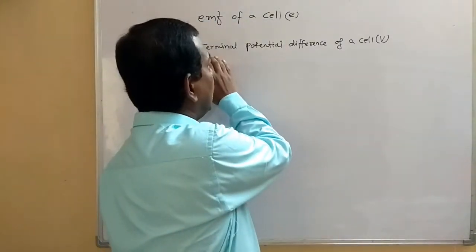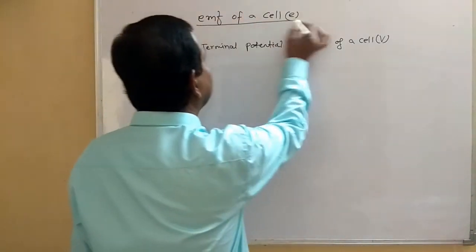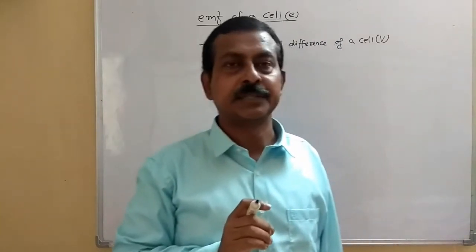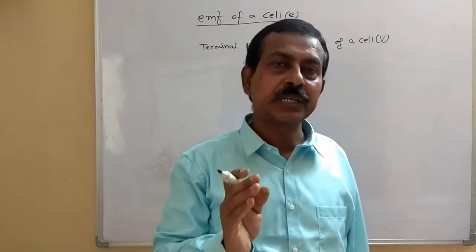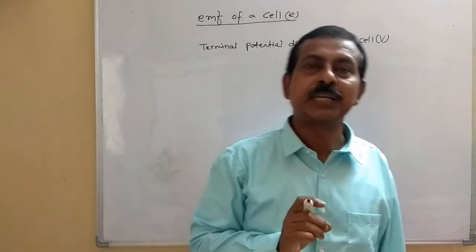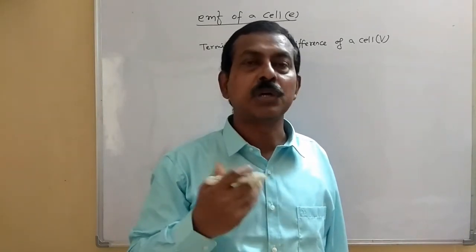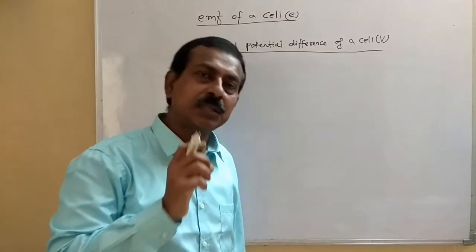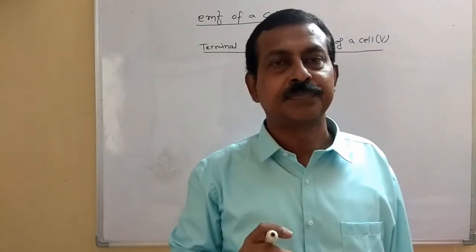Let's take EMF of a cell and terminal potential difference of a cell. EMF of a cell is the potential difference across the terminals of a cell when it is open-circuited, that means when it is not being used. Whereas terminal potential difference is the potential difference across the terminals of a cell when it is closed-circuited, or when it is being used.